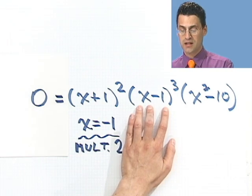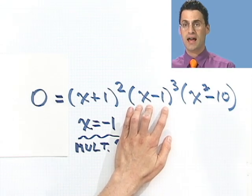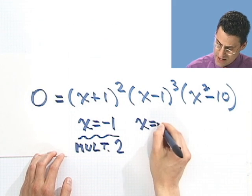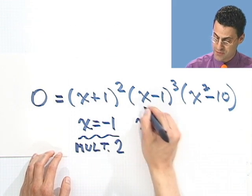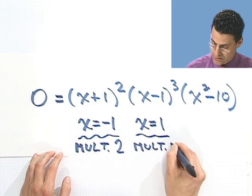What about this? Well here I would see that three times: x minus 1, x minus 1, x minus 1. So the root, or the zero, x equals 1, that's what makes this zero, would actually have multiplicity 3.